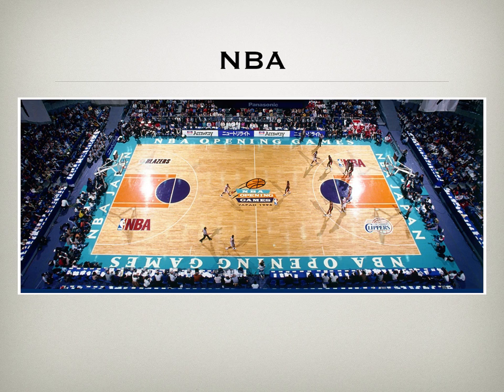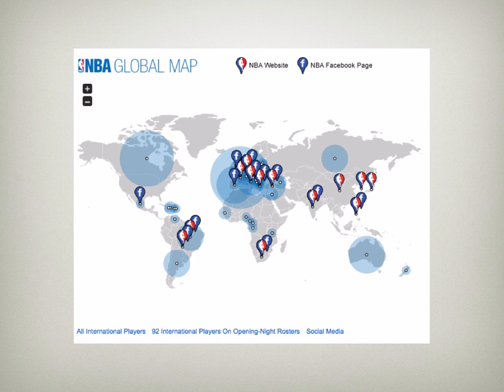This game right here was with the Portland Blazers and the Los Angeles Clippers. As you can see, the arena is full. It's not the standard-sized arena that we might see a game in today in Japan — it's probably 10 times larger. But to get that type of crowd in 1994, right after the Olympic Dream Team, is pretty amazing.